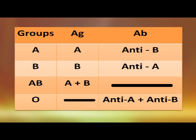Similarly, in a group B individual, the antigen on the red blood cell would be a B antigen, and the antibody present in the serum would be anti-A.